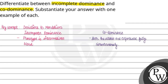Whereas in co-dominance, a blending effect is not seen. Instead, distinct identities are maintained — distinct alleles are both present and expressed, so there is no blending effect.